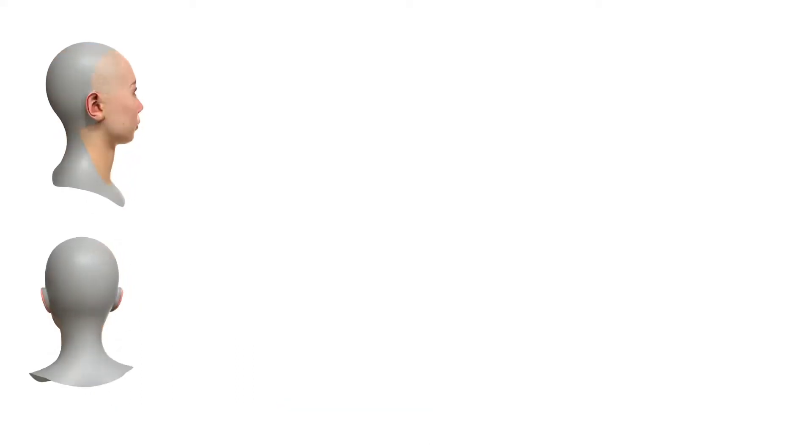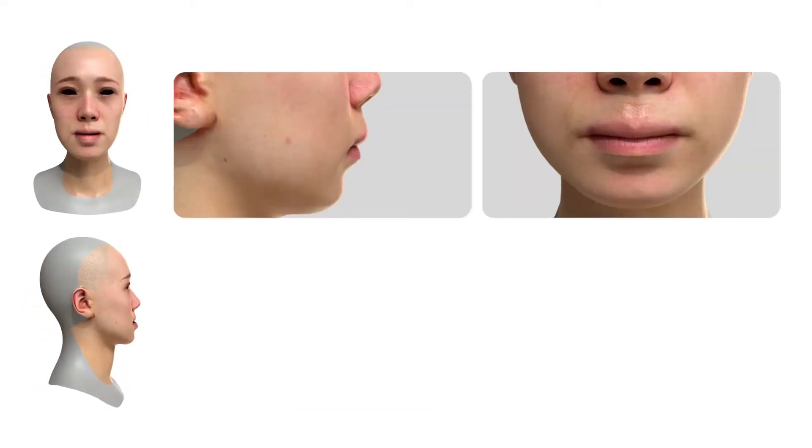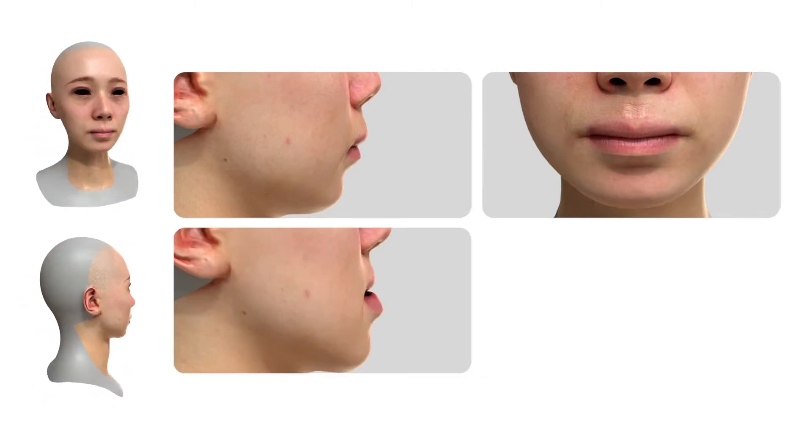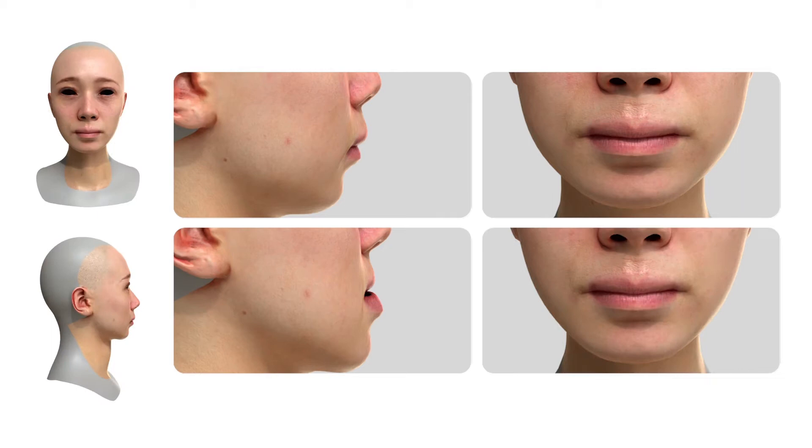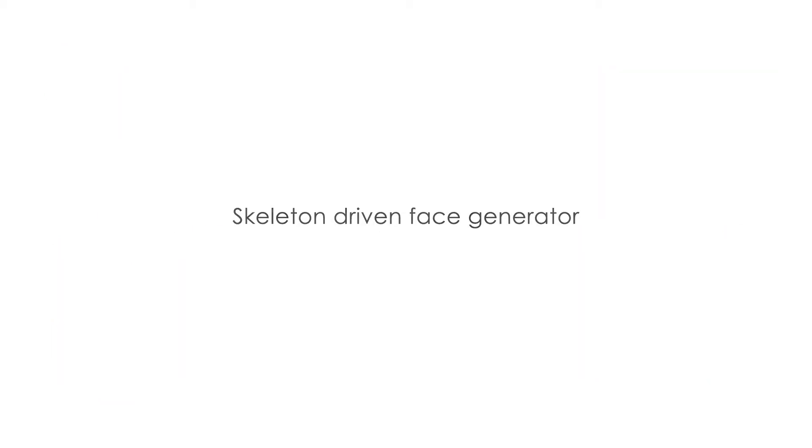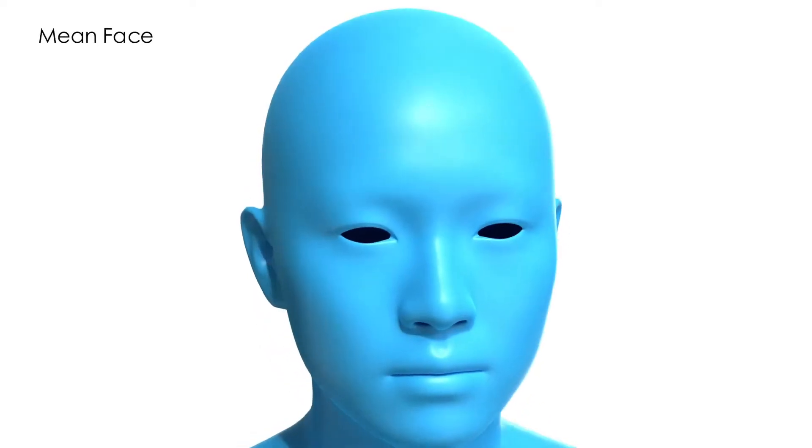We present SCULPTOR, a skeleton-consistent facial generator for high-quality and characteristic facial generation. SCULPTOR generates a much more diverse variety of faces while following anatomic principles. To create a new subject, we start with SCULPTOR's mean face and then sample on shape space to add head shape variations.